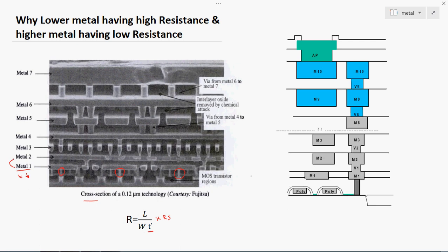Each and every metal — metal 1, metal 2, metal 3, metal 4, up to the top metal — has a different Rs value. Sheet resistance varies for each metal, and this is the first reason why every metal has a different kind of resistivity. Based on the Rs value, the resistance value changes accordingly.